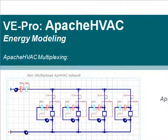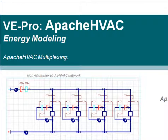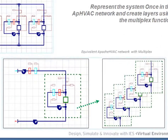In the top image of this slide you can see a four zone network with fan coil units for each zone and a common outside air system. Without the multiplexing feature, each fan coil unit and zone has to be represented in the network, leading to very large networks that are a nightmare to edit. With the multiplexing feature this is all avoided. You can represent the common outside air system and create one fan coil unit representation in the network.